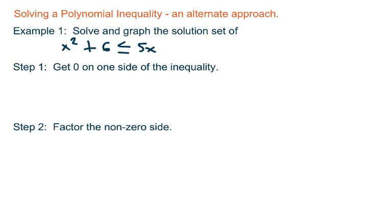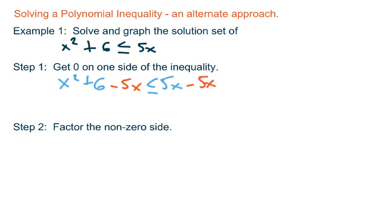In example one, solve and graph the solution set of x squared plus six less than or equal to 5x — a binomial on the left, monomial on the right, so that's a polynomial inequality. The first step is straightforward: get a zero on one side of the inequality using the idea of balance. We subtract 5x from both sides, and then rearrange the terms in decreasing degree order. That gives us x squared minus 5x plus 6 is less than or equal to zero. Step one is done.